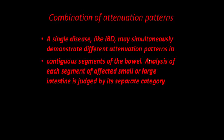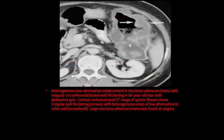Combinations of attenuation patterns may occur. A single disease like IBD may simultaneously demonstrate different attenuation patterns on contiguous segments of the bowel. Each segment of affected small or large intestine should be judged by its separate category. For example, heterogeneous low attenuation enhancement is seen in mucinous adenocarcinoma with irregular circumferential thickening, seen in a 60-year-old man with abdominal pain.